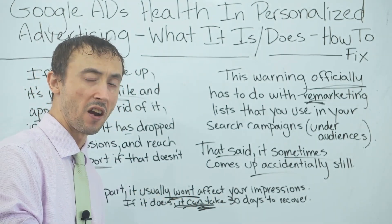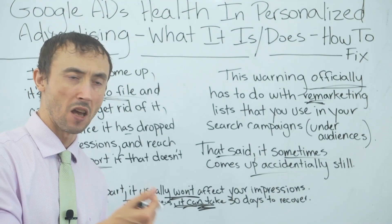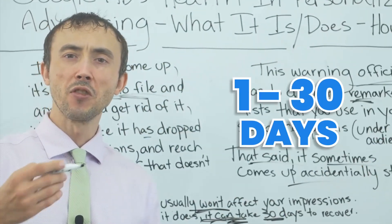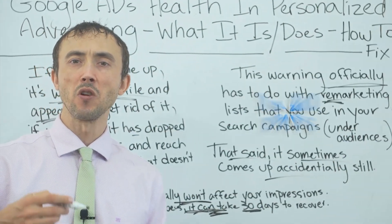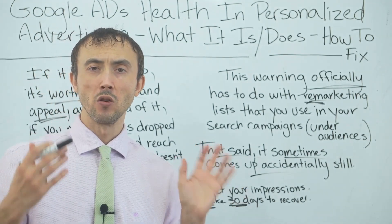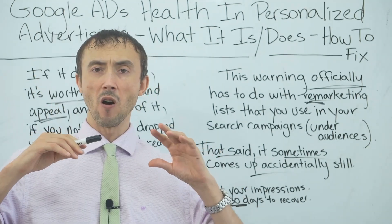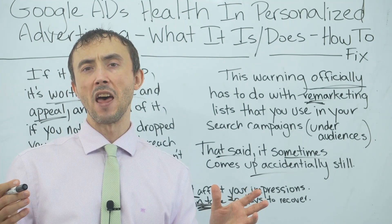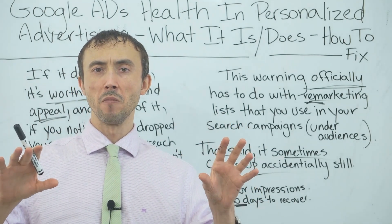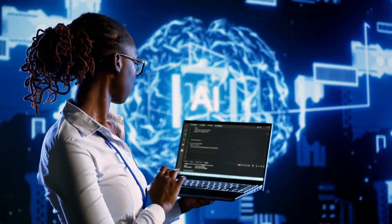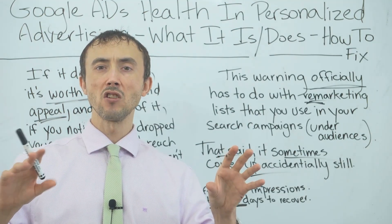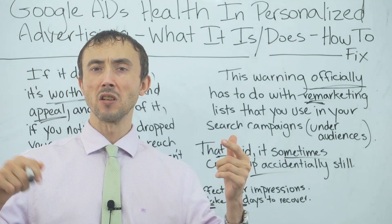On top of that, even after you get the warning taken off — because you deleted your remarketing audiences — it's probably going to take anywhere from 1 to 30 days for your impressions to go back to where they were. Unfortunately, Google's system runs off an algorithm and machine learning, and they hate changes in your ads.